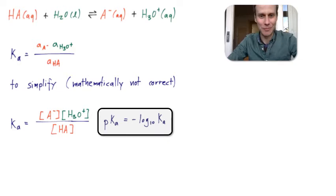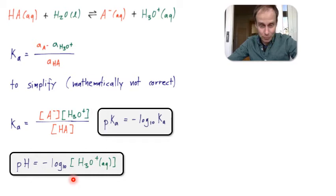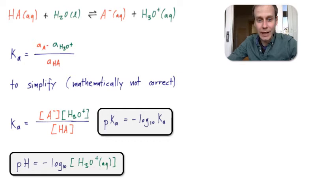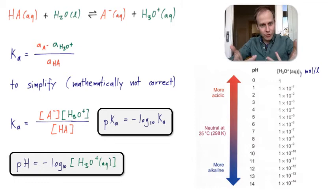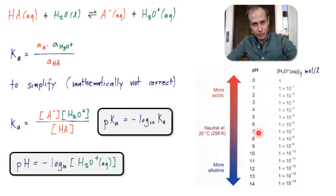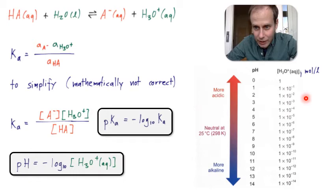There's another very important definition: the pH value, which I'm sure you've heard of. The pH value is defined as the negative logarithm to the base 10 of the hydronium ion concentration. It tells you how much hydronium is in the water. pH 7 is defined as neutral; a pH below 7 is acidic, and a pH above 7 is alkaline. In acidic regions, you have high concentrations of hydronium ions.